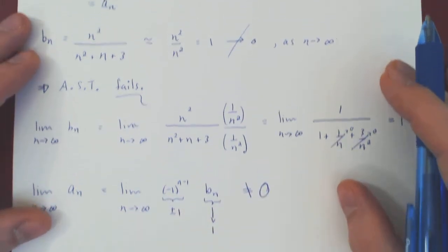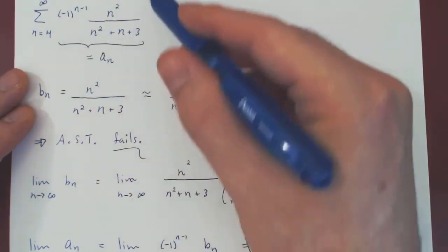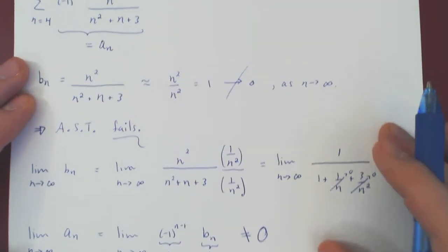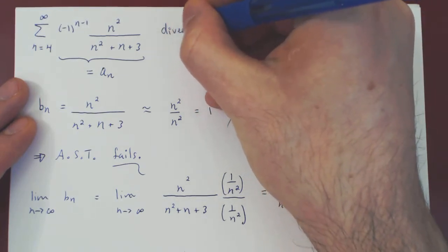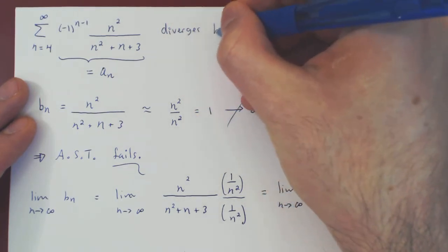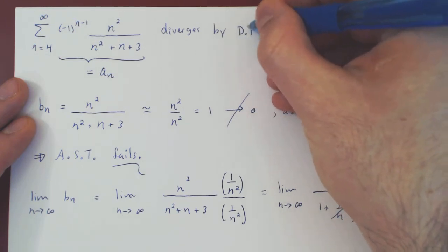Therefore, the terms we are summing are not getting small enough and so the series diverges by the divergence test.